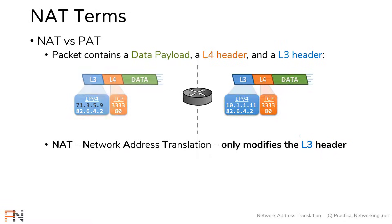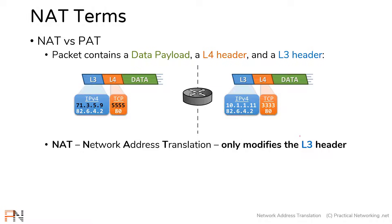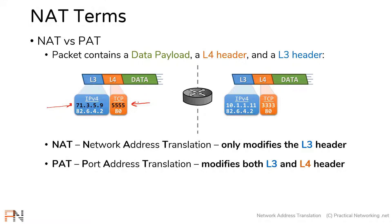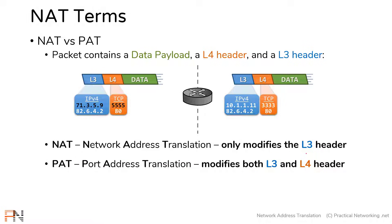By comparison, if as the packet crosses a router, you modify both the layer 3 and the layer 4 header — notice here the IP address is different and the ports are different — you have what's known as a PAT. A PAT stands for port address translation. A PAT's definition is a modification of both the layer 3 and the layer 4 header, which means the IP addresses and the ports.